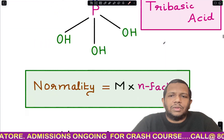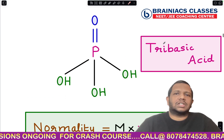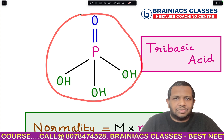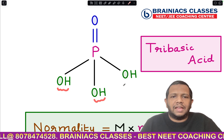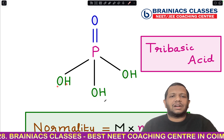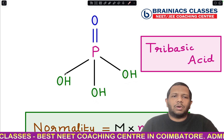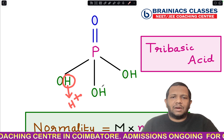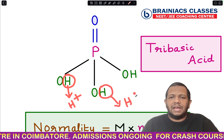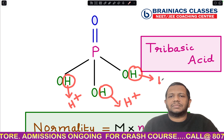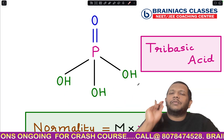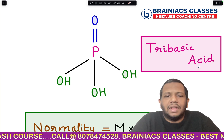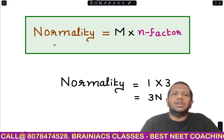Looking at the structure of H₃PO₄: there are three hydrogen atoms each connected to an electronegative oxygen atom. Whenever hydrogen is bonded to an electronegative atom, it is easily ionizable and can be donated as H⁺. All three hydrogen atoms can be donated as H⁺, so H₃PO₄ is a tribasic acid.